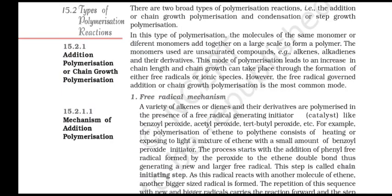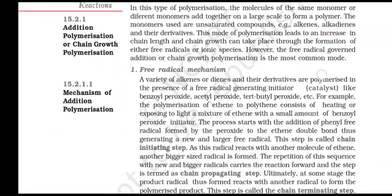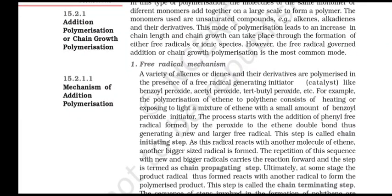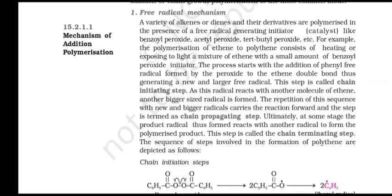Addition polymerization or chain growth polymerization: in this type of polymerization, molecules of the same monomer or different monomers add together on a large scale to form a polymer. The monomers used are unsaturated compounds such as alkenes, alkadienes and their derivatives. This mode of polymerization leads to an increase in chain length and chain growth can take place through the formation of either free radicals or ionic species. However, the free radical governed addition or chain growth polymerization is the most common mode.